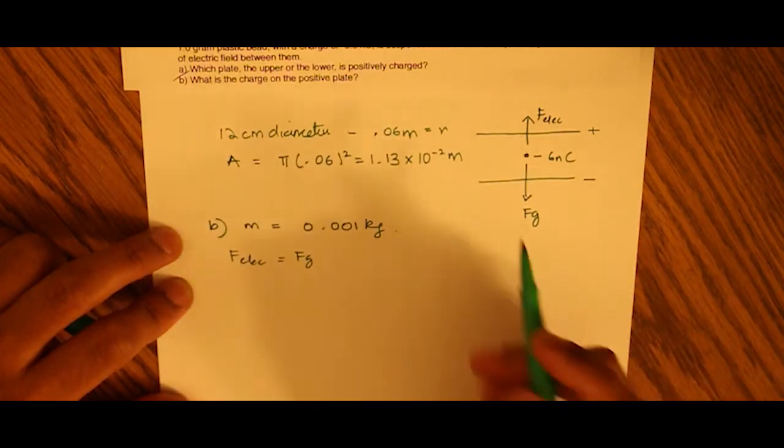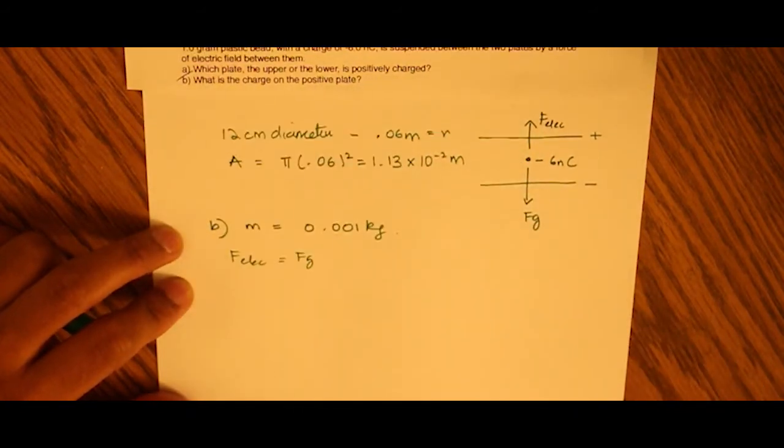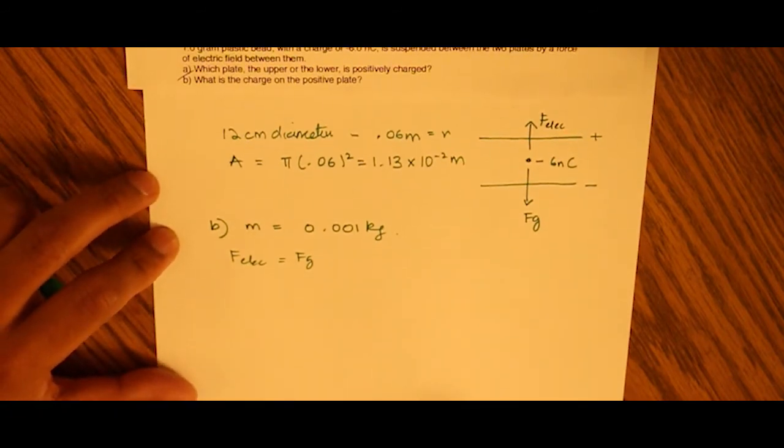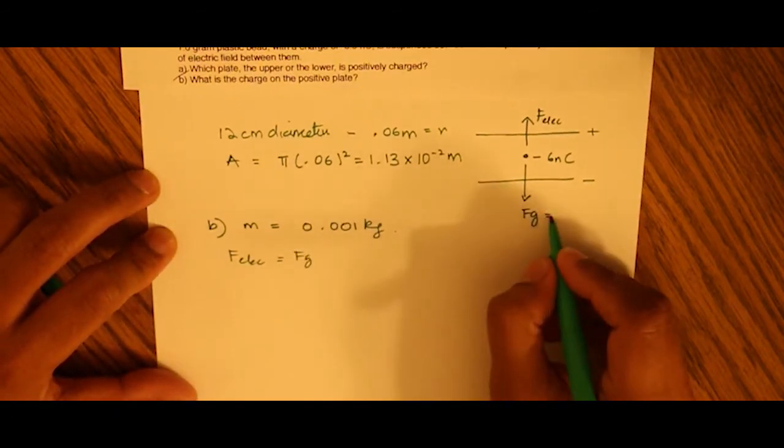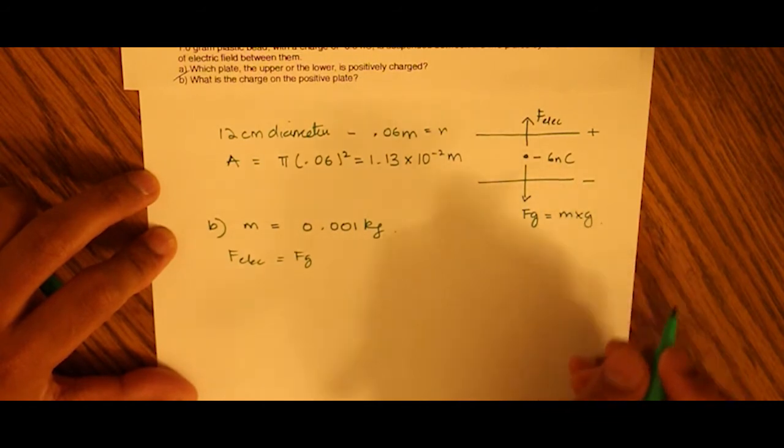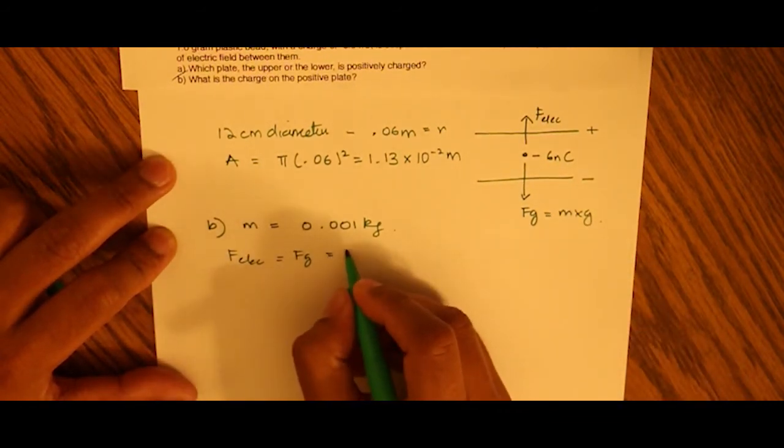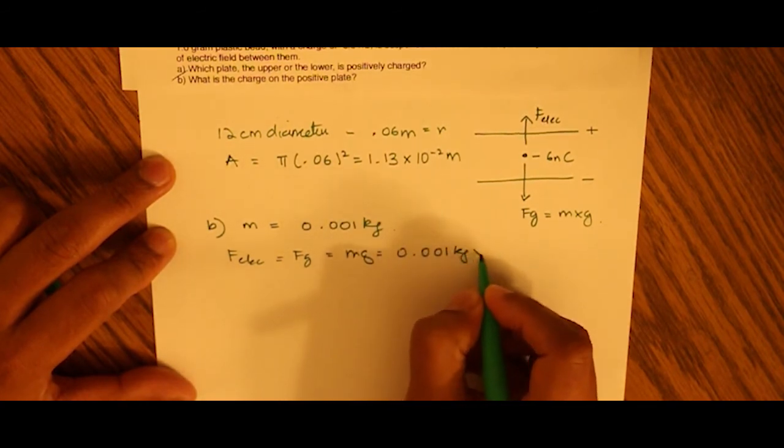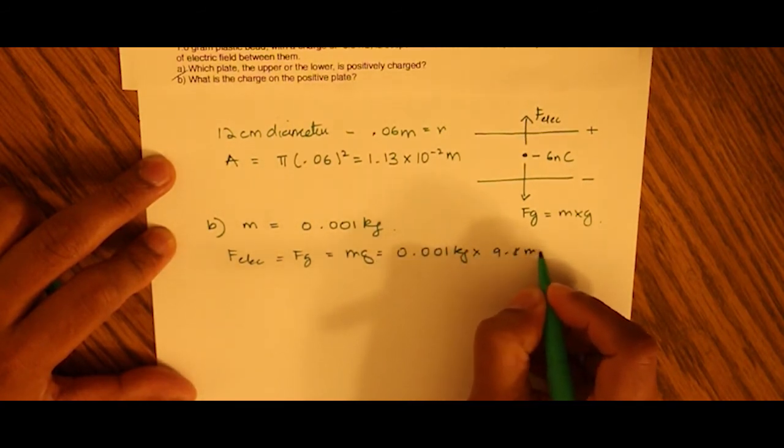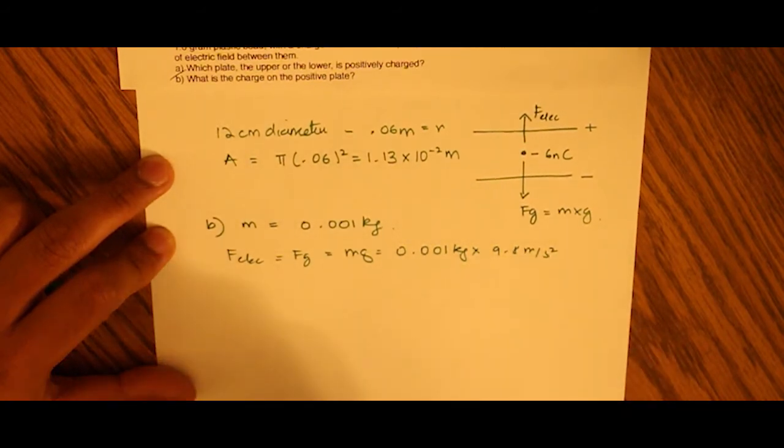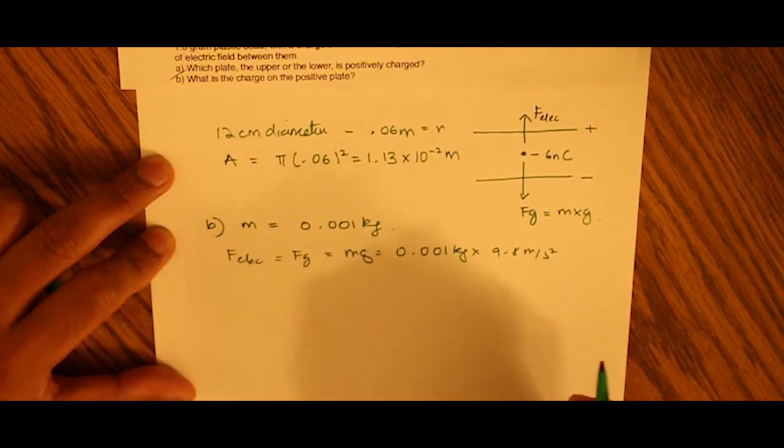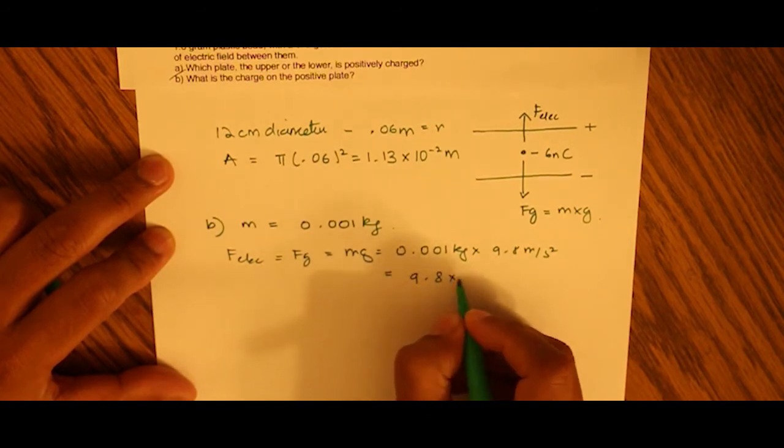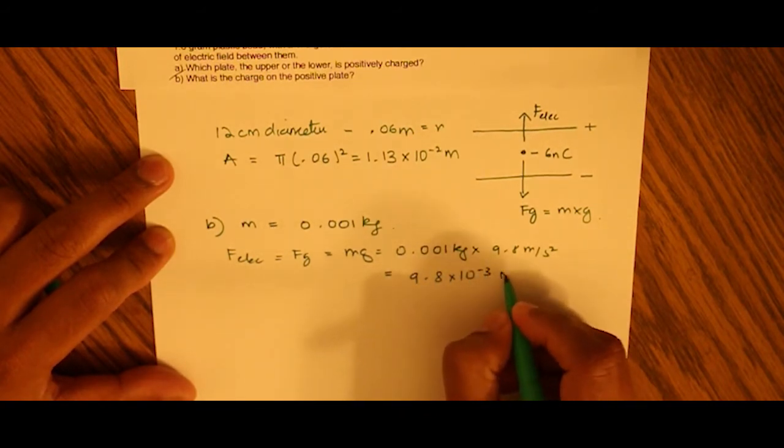It's suspended. By suspended, they mean it's stationary, so it's not going anywhere. So these two must be equal. And the force of gravity is nothing but mass times the acceleration due to gravity. So we know the mass as 0.001 kilograms, and we know acceleration due to gravity is 9.8 meters per second squared.